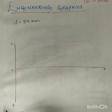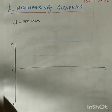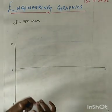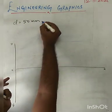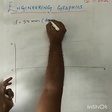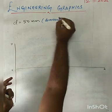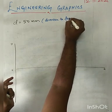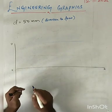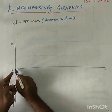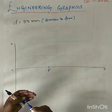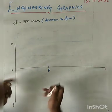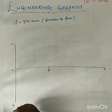Now the next step: the data given is that the distance between the directrix and focus is 50mm. We need to read the question very carefully. This is the directrix line, and from here to the focus point, I will mark the distance as 50mm. So OF is now 50mm.